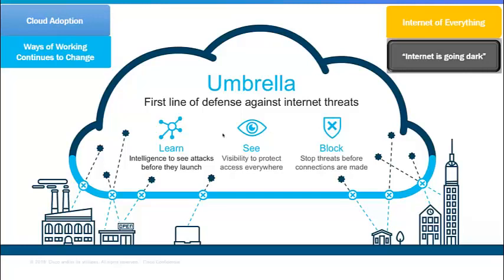The Umbrella Investigate tool you saw is something customers can use for proactive investigation around threats — are they targeted against your organization directly, are they geographically based or globally based? We can build up that intelligence from what we know about the internet. More importantly, we can be predictive and block based on threats we're seeing, or based on policies you put in place about what users can access — social media applications, gambling sites, etc.